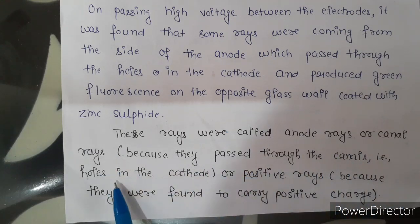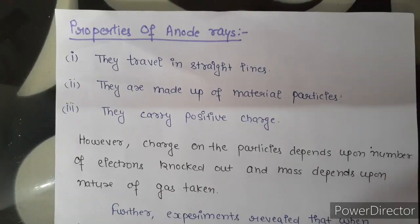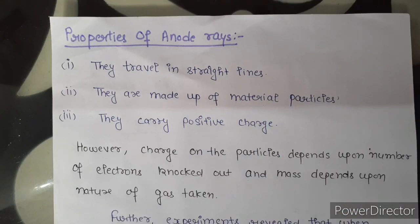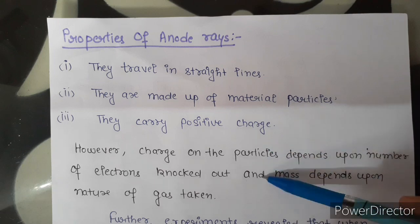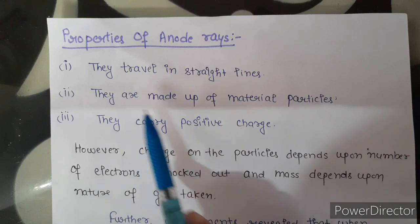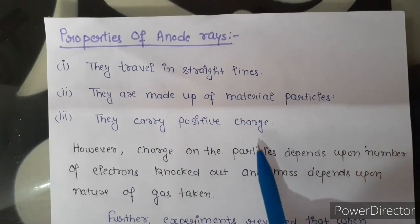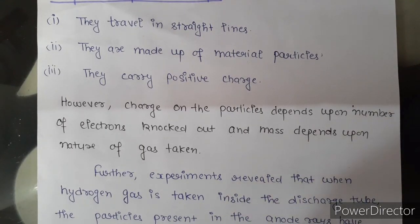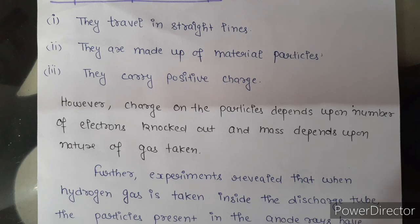Next are the properties of anode rays. Using the same experimental methods as for cathode rays, anode rays are found to possess the following properties: they travel in straight lines, they are made up of material particles, and they carry positive charge. Unlike cathode rays, when the charge-to-mass ratio was calculated using different discharge tubes, different electrodes and different gases, the charge-to-mass ratio was found to be different. This means the charge-to-mass ratio depends upon the nature of gas inside the discharge tube, and the charge on the particle depends upon the number of electrons knocked out.